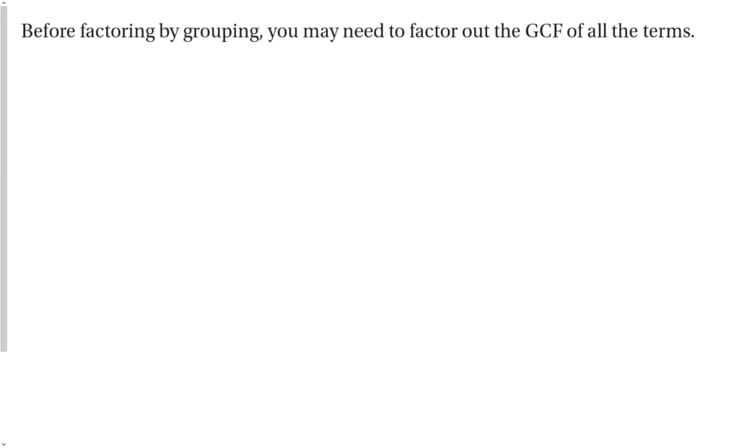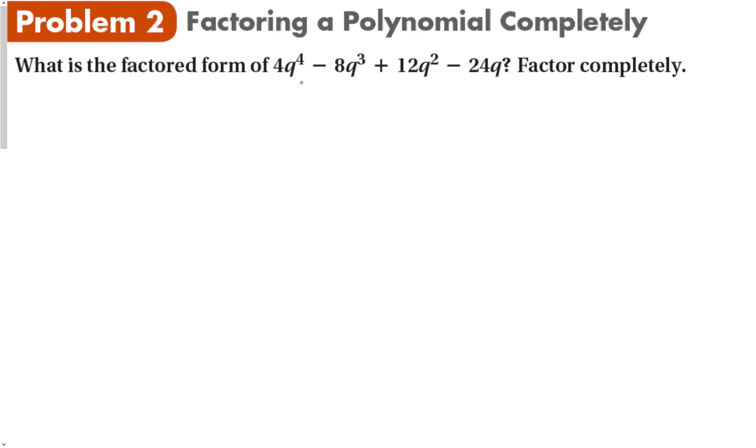Before we factor by grouping, you want to make the problem easier on yourself. You want to factor out any common factor from all the terms, if there is one. So is there a common factor between all four of these terms? Yes. It is 4 times q. And if I do that, I now have q to the third minus 2q squared plus 6q minus 3q minus 6.